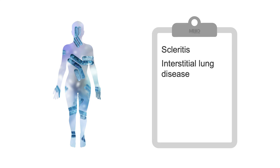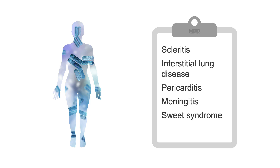Think of something else if the patient is complaining of symptoms in these locations. As a systemic autoimmune disease, RA can also affect organs other than the joints. Examples of extra-articular manifestations include scleritis, interstitial lung disease, pericarditis, meningitis, Sweet syndrome, also known as acute febrile neutrophilic dermatosis, and vasculitis.